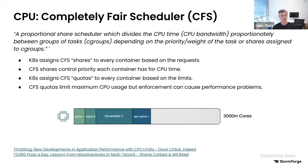Kubernetes passes requests and limits to the Kubelet, which runs on each node and is responsible for isolating containers from each other. There are various types of isolation required — process isolation, networking, etc. For resources, it uses something called cgroup. Cgroup is the tool that does resource isolation on the node, and the Kubelet translates your requests and limits into cgroup configuration. Every container gets its own cgroup. For CPU, it translates into the CFS completely fair scheduler configuration.